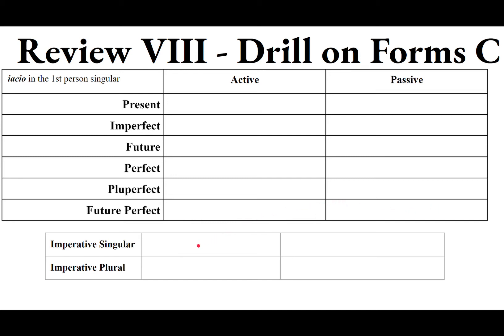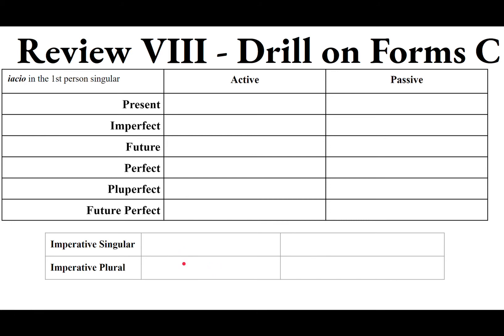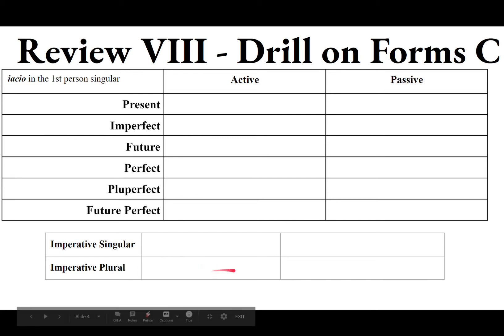For the imperatives — the commands — the imperative singular of a third IO conjugation is found by going to the second principal part and chopping off the RE, giving IACE: throw. In the plural, the E in IACE becomes I when you add the plural TE: IACITE — throw ye.